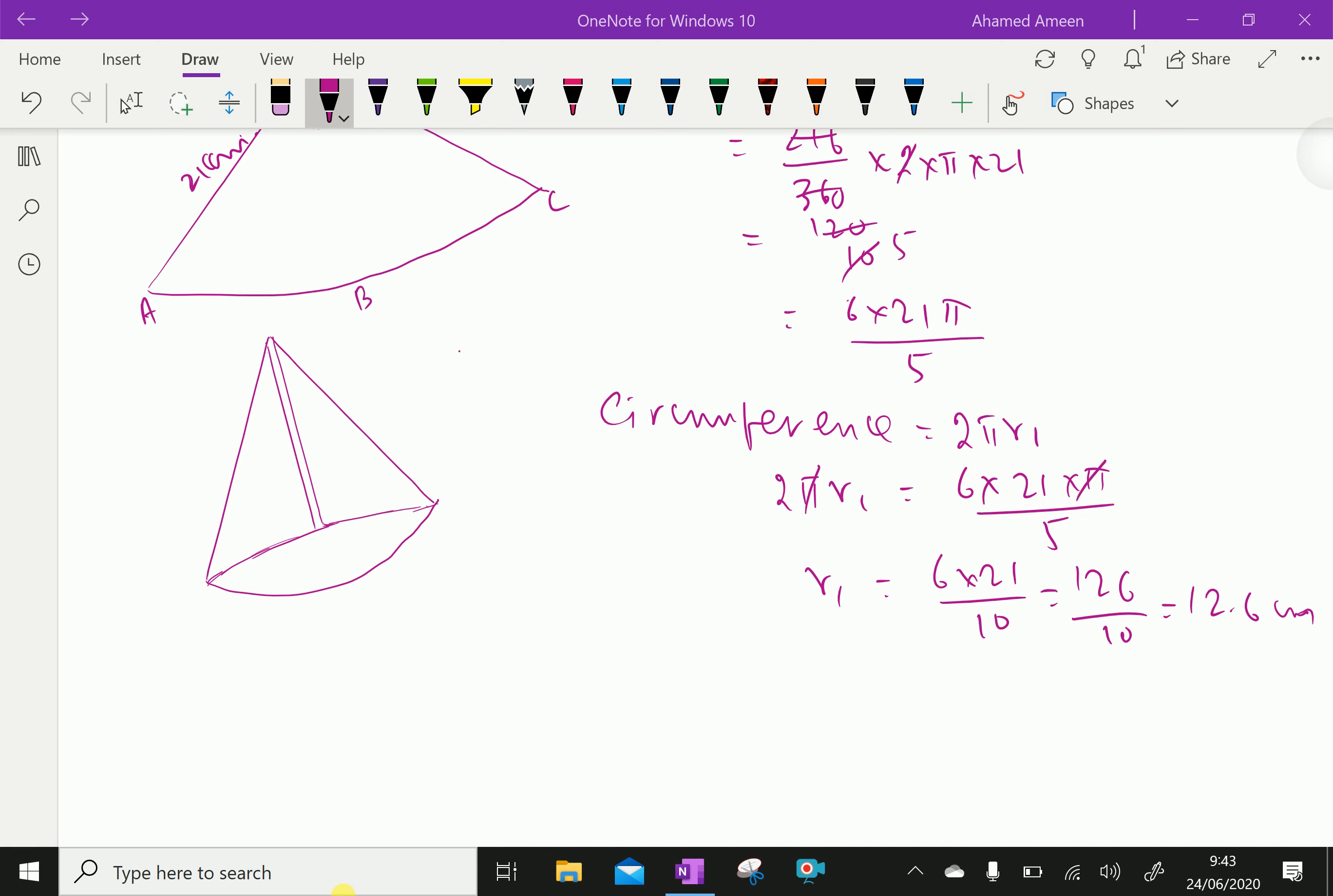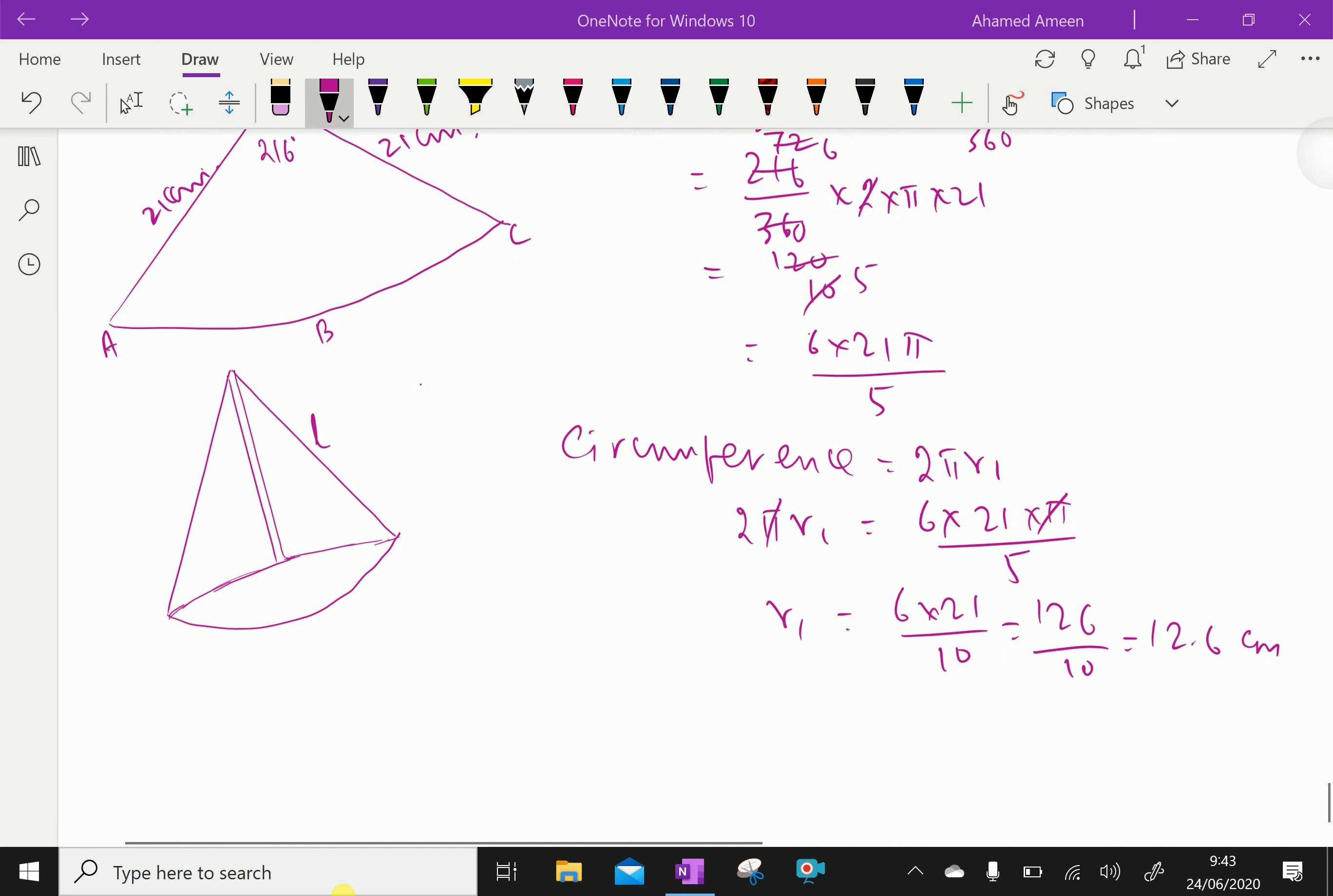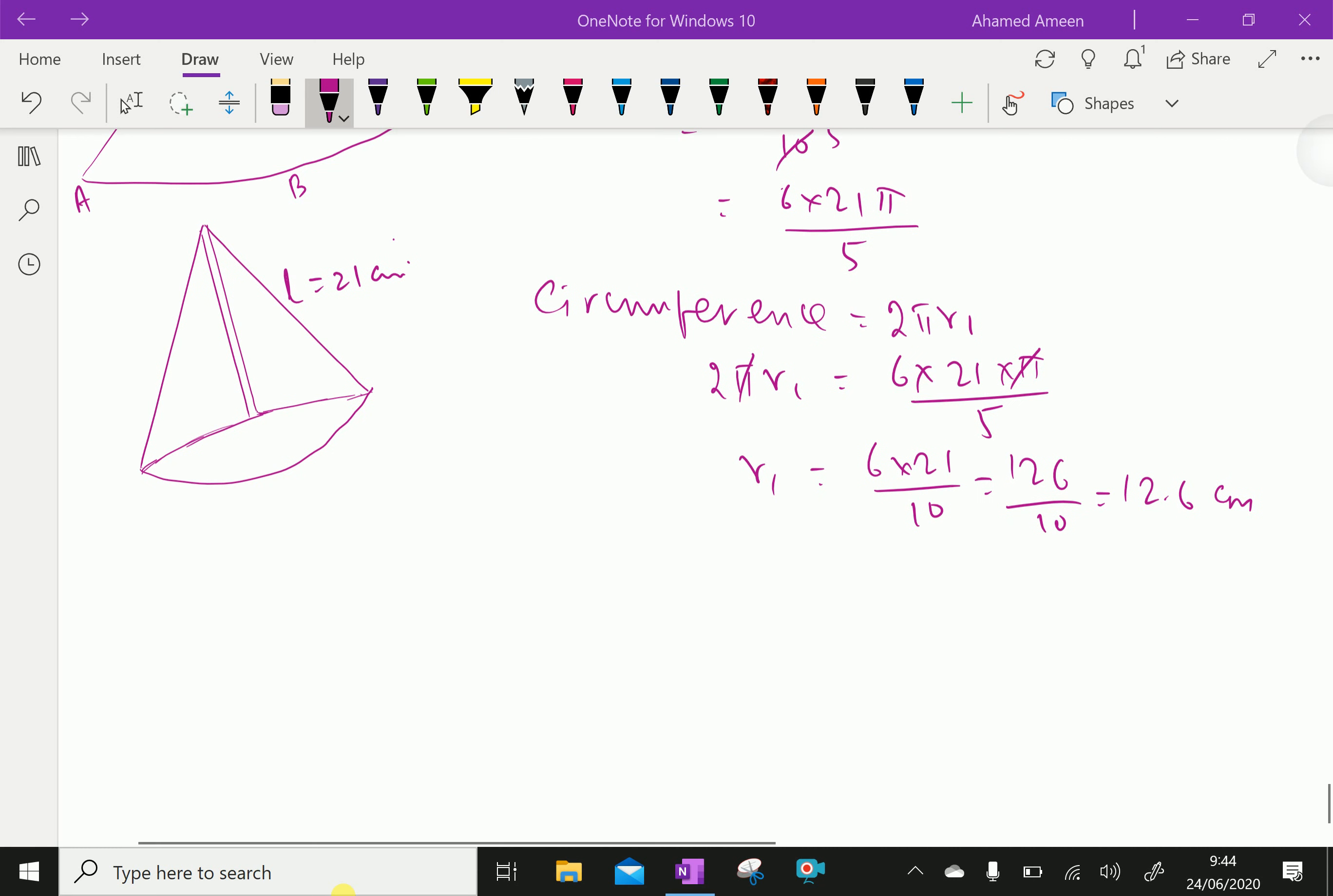12.6 cm is radius of the cone formed. This is L, lateral length of the cone, that is 21 given, 21 cm. Now, we will find the height of the cone.